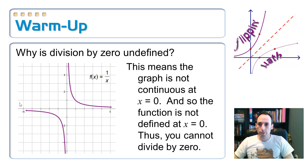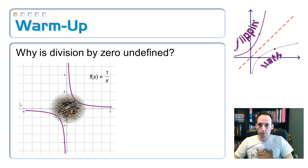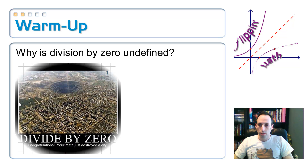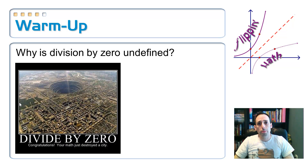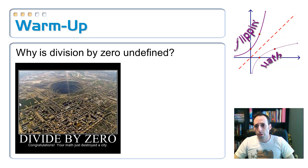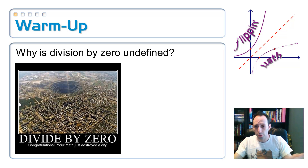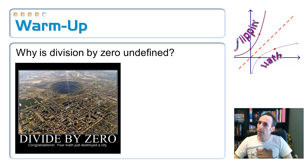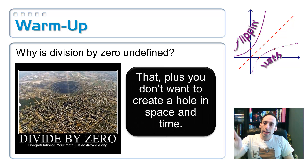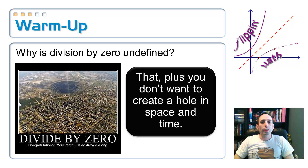There's also this — this is what I was talking about at the very beginning of the lesson. These things are all over the internet. People make comments like: 'Oh, somebody must have divided by zero. Congratulations, your math just destroyed a city.' So you can't divide by zero because you don't want to create a hole in time and space.